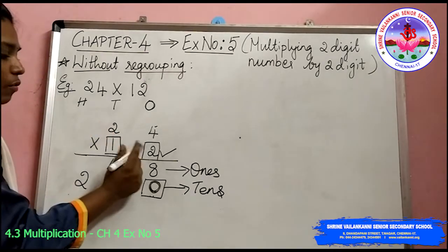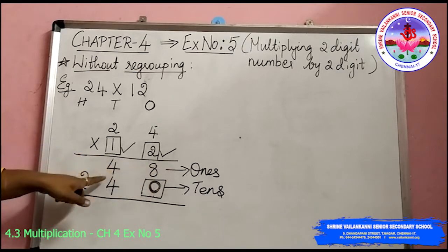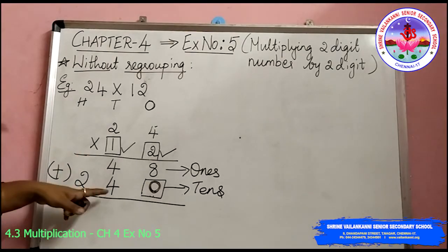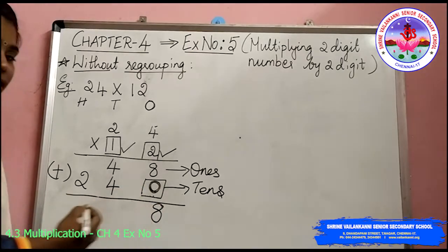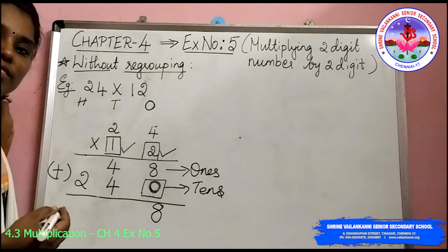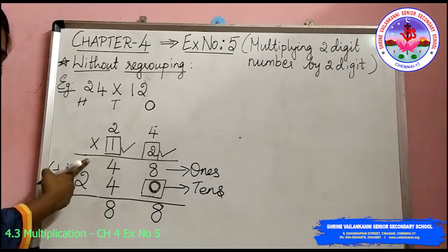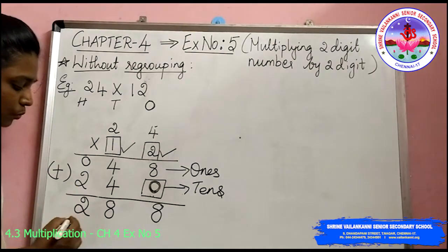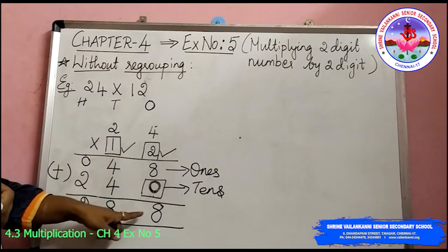Now we have completed the multiplication of ones and tens. Give the dash. Now we do addition with these two rows. Eight plus zero gives eight. Then four plus four gives eight. Next, above you don't have any number — you can consider it as zero — so zero plus two gives two. Your answer after multiplying 24 into 12 gives 288.